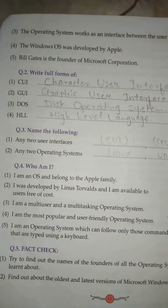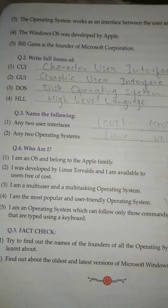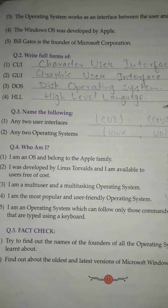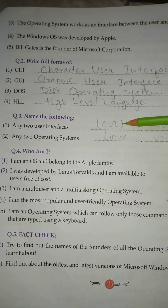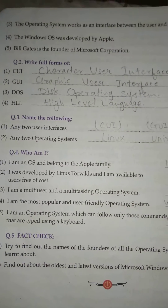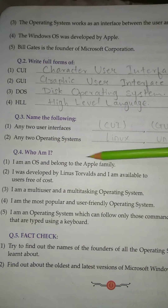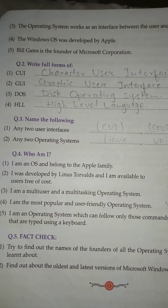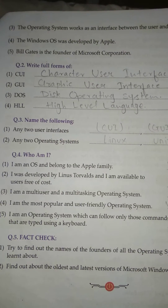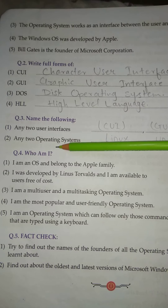Question No. 3: Name any two user interfaces. Answer: CUI and GUI. No. 2: Name any two operating systems. Answer: Linux and Unix.